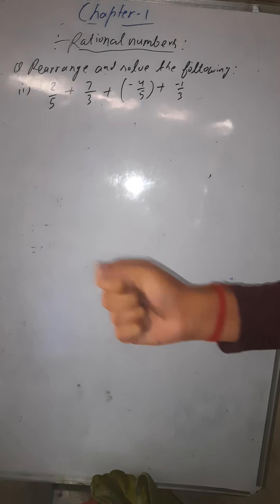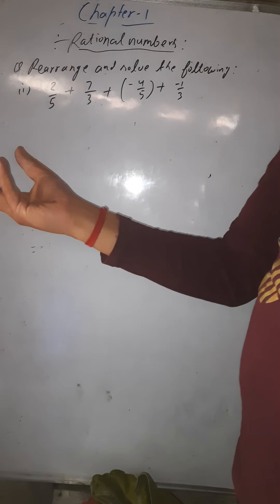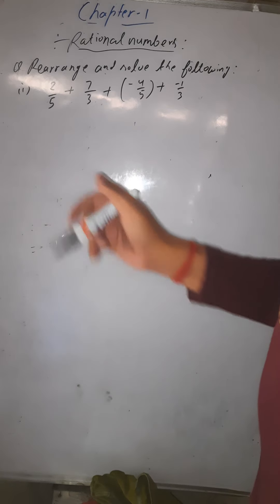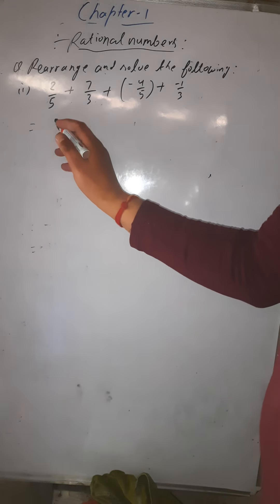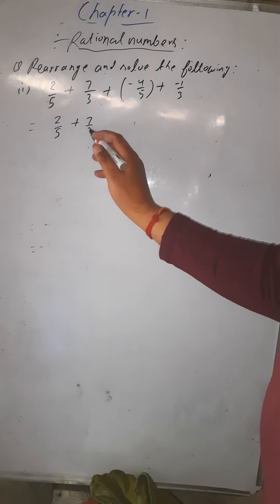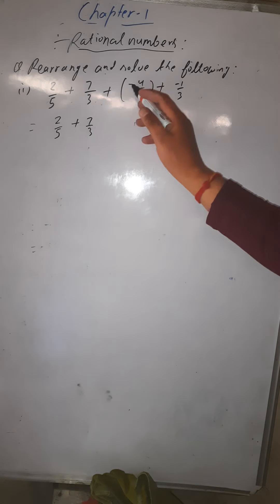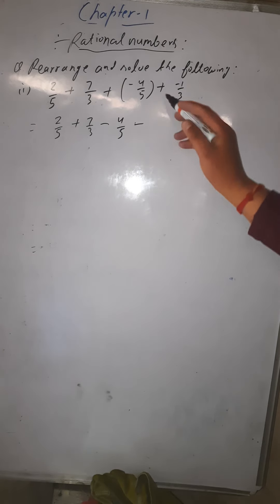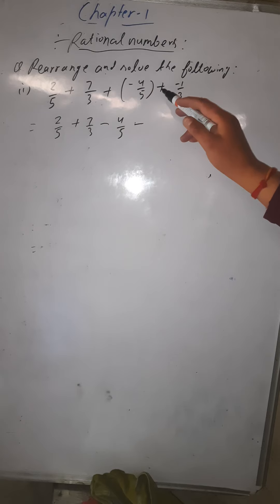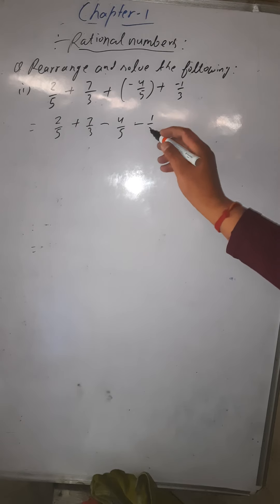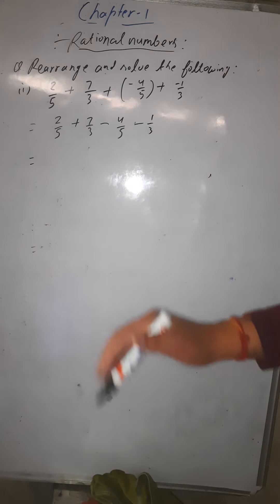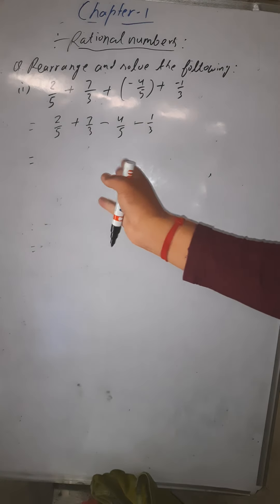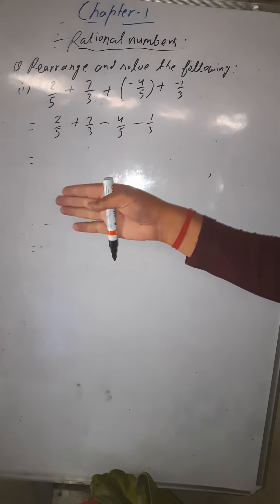In the commutative property, you can change the order of the numbers. We will use the same property here. So the expression is 2/5 + 7/3, and the plus into minus becomes minus 4/5, and plus into minus gives minus 1/3.